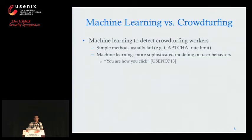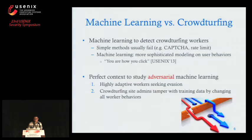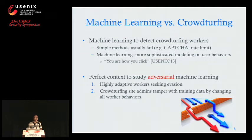To defend against crowd-turfing, we think machine learning has a chance. Unlike simple solutions like CAPTCHA and rate limiting that don't work on real people, machine learning can build more sophisticated user behavior models to distinguish workers performing those tasks versus regular users. We did a paper last year to build machine learning behavior models to catch fake accounts in social networks. Malicious crowdsourcing also provides a perfect scenario to study adversarial machine learning, since we're dealing with real users who are highly adaptive, and crowd-turfing administrators have central control and can perform powerful countermeasures.